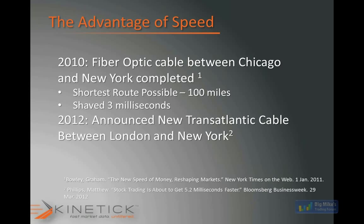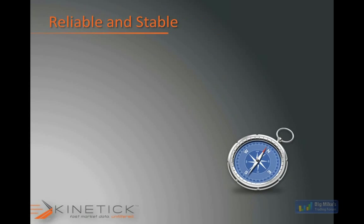Right now they're actually building a transatlantic cable from London to New York with the same goal — to save about 5.2 milliseconds. The cost for this one was $300 million. You can see where the markets are going in terms of providing this speed, and that's filtering down to you in terms of the Kinetic Data and how that data is provided. The reliability and stability of the feed itself is the result for you when live trading.